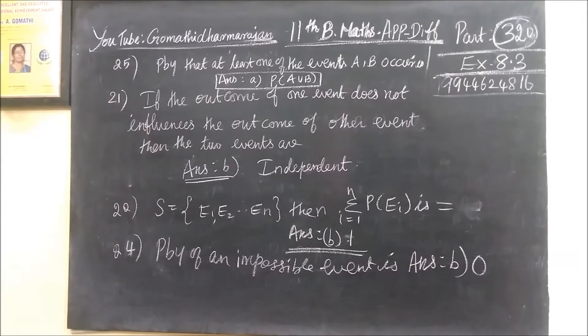Probability that at least one of the events A, B occur. At least one word, the way P of A union B. If you find a word at least, if you find two events, we are using the formula P of A union B. Intersection means two. Union means all. Either A or B or both, two events may be there. You are using the option A, P of A union B.